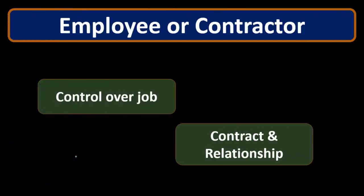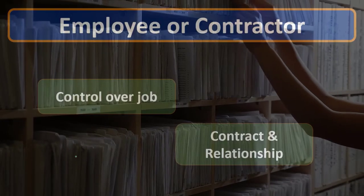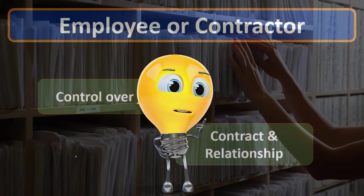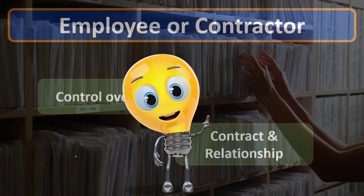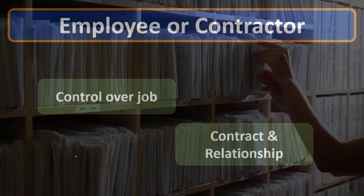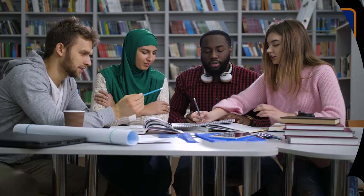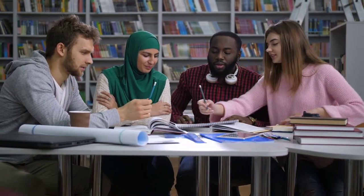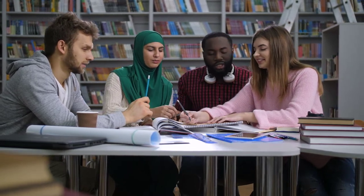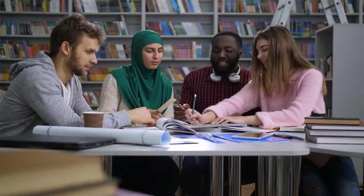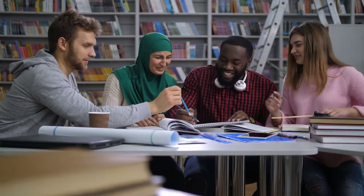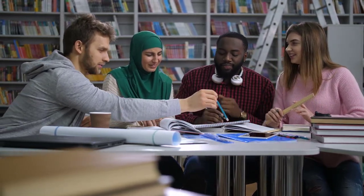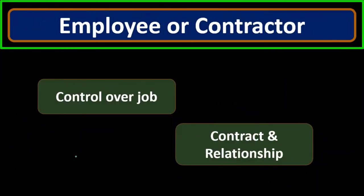Classifying workers as contractors means the business is not responsible for many legal responsibilities such as reporting, withholding, paying payroll taxes — which cuts costs. The advantage of having employees is you have more control over their behavior, and you can provide benefits like a 401(k) plan, which can attract better workers. So those are some pros and cons between contractor and employee relationships.